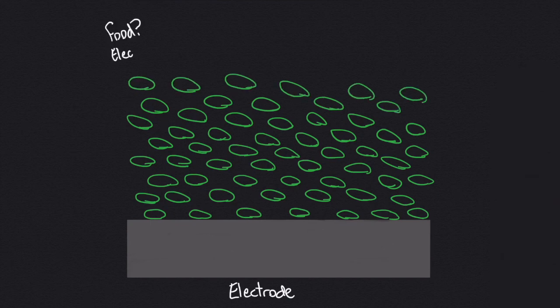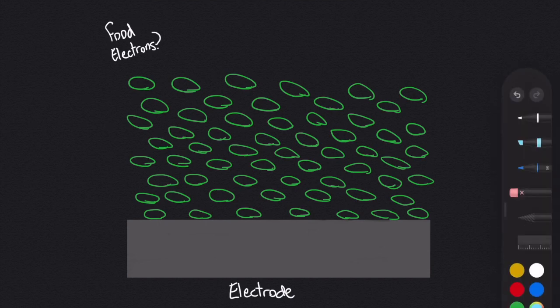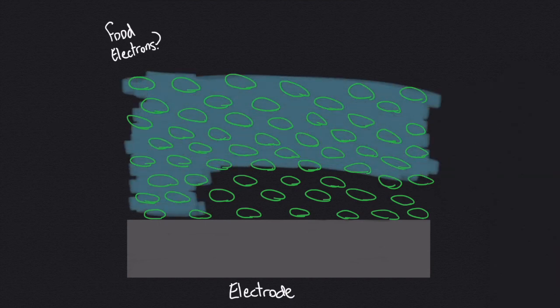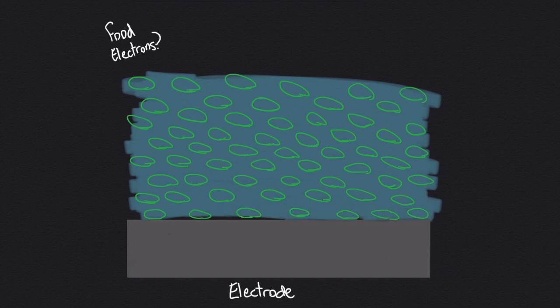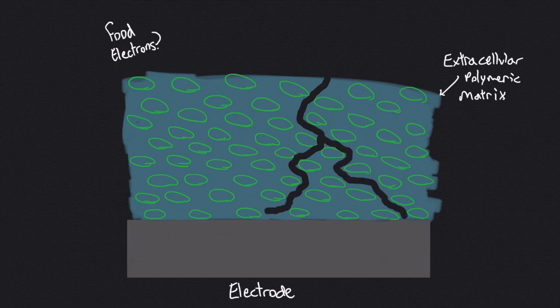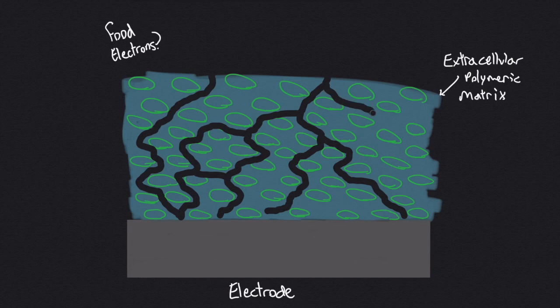You might be wondering how does a cell attached to the electrode obtain organic matter to eat, and how does a cell at the edge of the layer donate its electrons to the electrode? In order to clump together, the bacteria form an extracellular polymeric matrix which contains channels for water and other nutrients such as food to pass through and reach cells throughout the film.